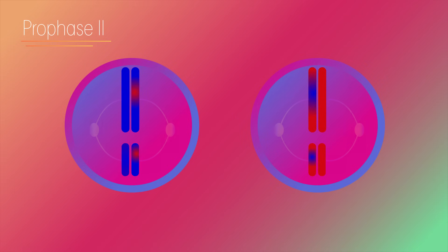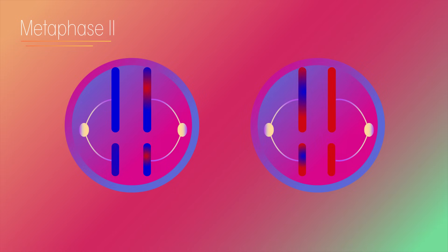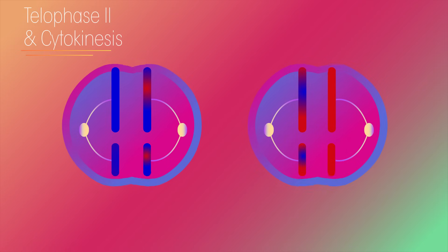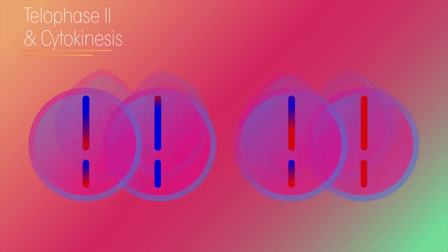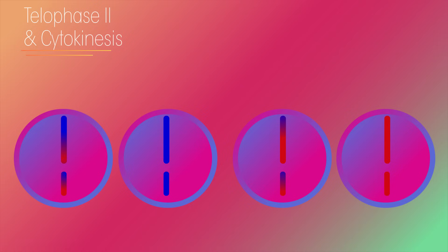Then aligning in the middle of the cell during metaphase two, and chromatids are pulled apart during anaphase two by the spindle fibers. Telophase and cytokinesis pinch the cells together, with four new granddaughter cells being formed.